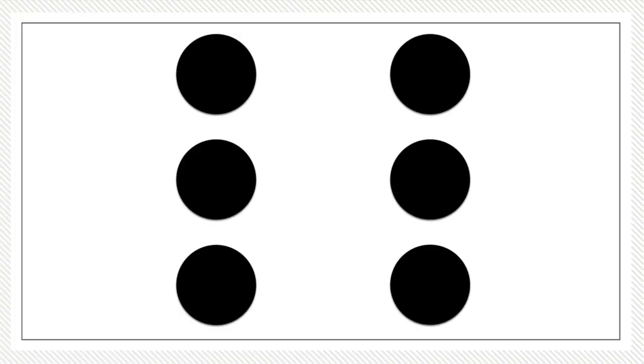When kids first recognize the dice pattern for six, they don't actually see the six things. They see three and three, or they might see it some other way — but three and three is typical because of the way the pattern is. Later, they start to just recognize that pattern as six things. When we are working with fractions, the quantities we use for numerators and denominators need to be small, or else kids will count instead of subitizing.